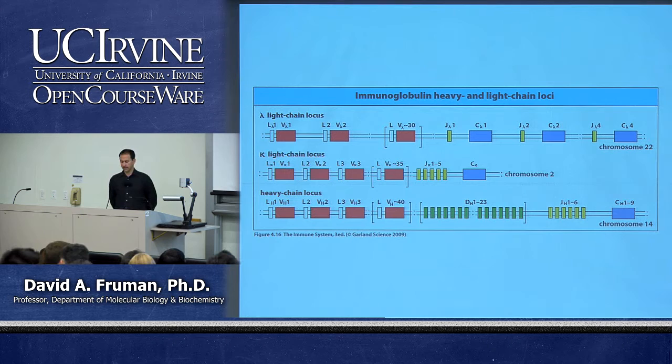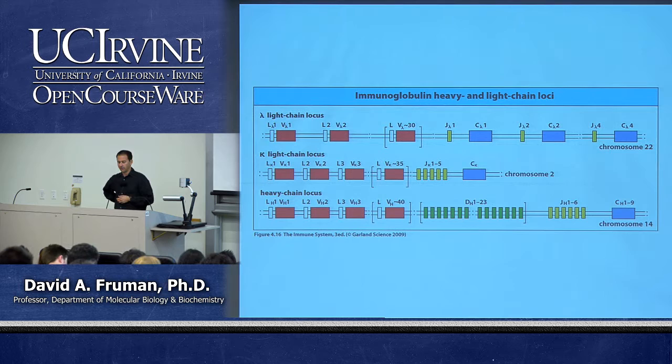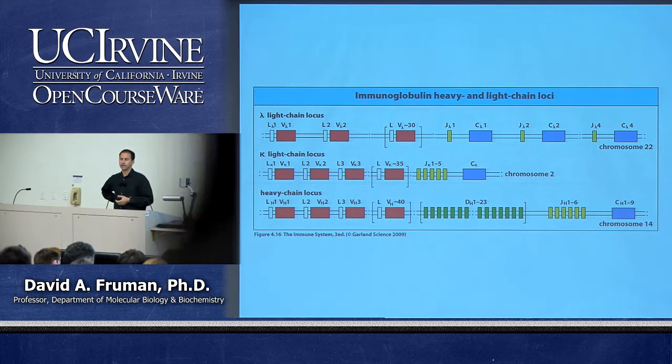Any substance can elicit an antibody response — it doesn't matter whether it's a pathogen, a synthetic protein, or a protein from a mouse or human. Anything that a particular organism sees as foreign can elicit an antibody response. You have a huge repertoire of B cells each with its own unique antigen receptor, estimated at more than a billion or maybe 10 or 100 billion different B cell clones capable of producing different antibodies. The question is how you generate this kind of diversity.